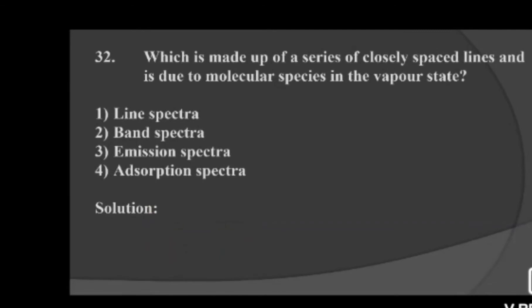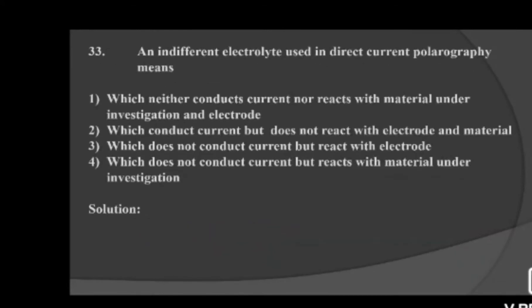Next question: which is made up of a series of closely spaced lines and is due to molecular species in the vapor state? Option 1: line spectra, option 2: band spectra, option 3: emission spectra, option 4: absorption spectra. The series of closely spaced lines due to molecular species is known as band spectra — option 2 is correct.